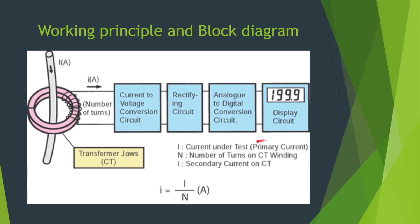Current to voltage conversion circuit converts the current to voltage. Rectifying circuit is used for rectification from AC to DC and there is this analog to digital conversion circuit. And the final output is obtained on the display.